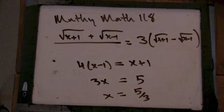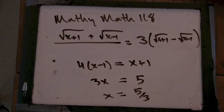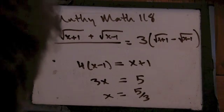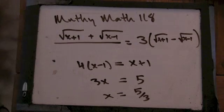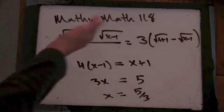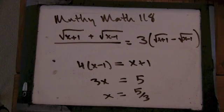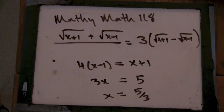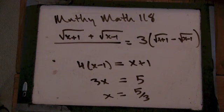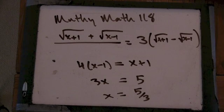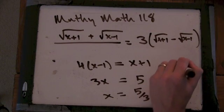So x is 5 thirds. Is that the answer? They wanted x. We could check it. We always want to check, but in this case we especially want to check. Why? Because we squared some stuff — we did some operations that sometimes produce bad answers.